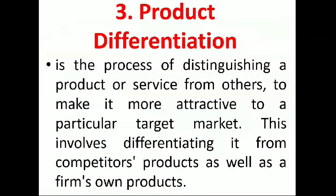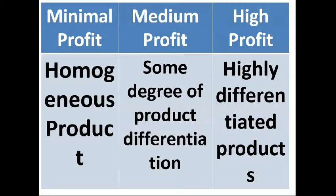Number three is product differentiation, which is the process of distinguishing a product or service from others to make it more attractive to a particular target market. In the minimal profit or perfect competition, the products are homogeneous — meaning they are uniform. If Pedro is selling vegetables and Juan is also selling vegetables, they are engaging in the same market with the same product, so it depends on their strategies to attract consumers.